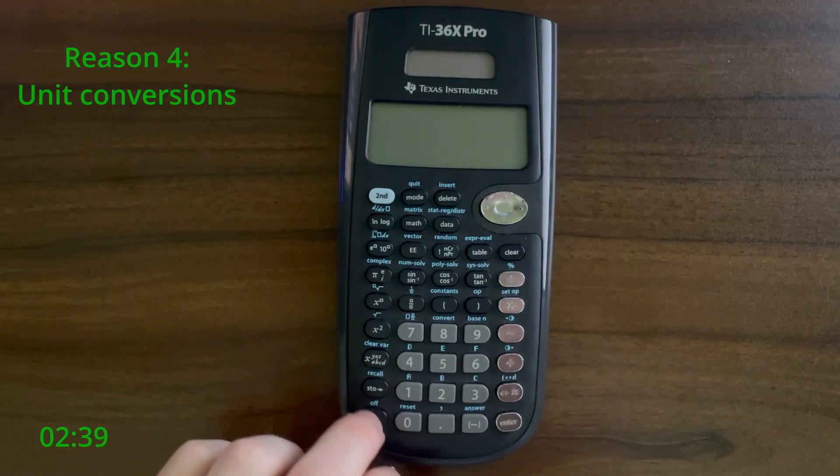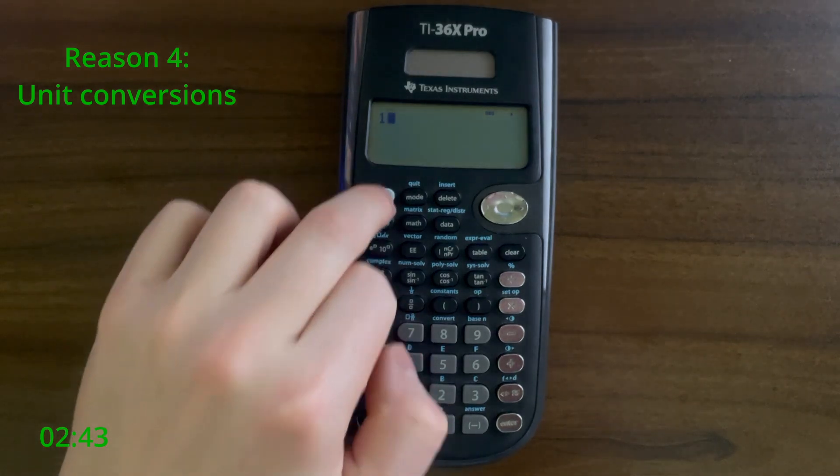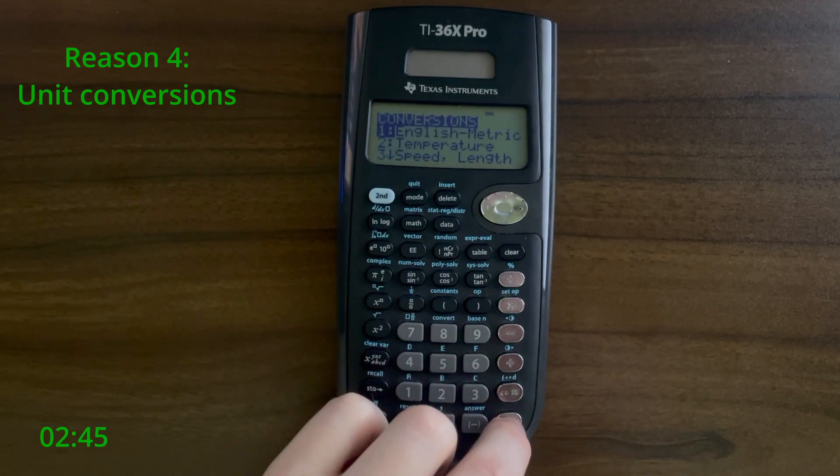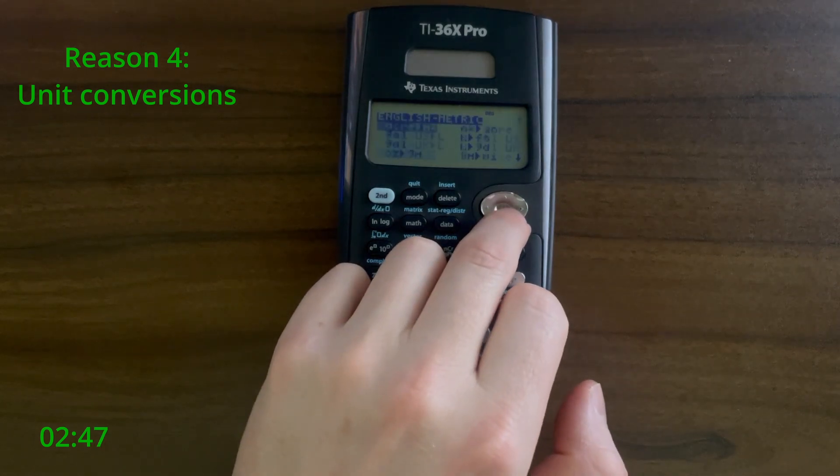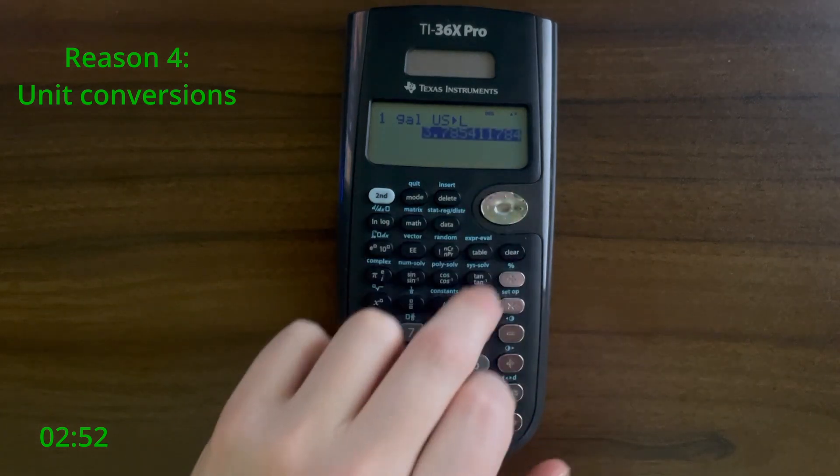The TI-36X Pro also contains unit conversions. For the FE and PE, it is definitely faster to memorize unit conversions or find them in the reference manual, but this is still a feature that I think could be useful.